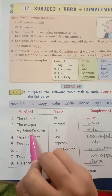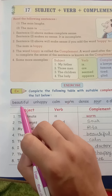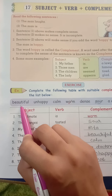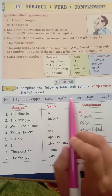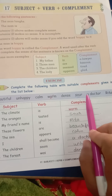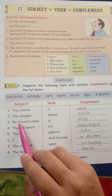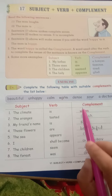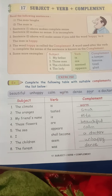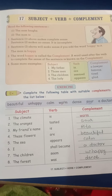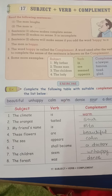My friend's name is dash. Now, can a friend's name be 'beautiful' or 'unhappy' or 'calm' or 'dense' or 'sour' or 'doctor'? No — it would be 'Rita.' My friend's name is Rita. In this way, students, you will solve this exercise. I hope you understood what is subject, what is verb, and what is complement.